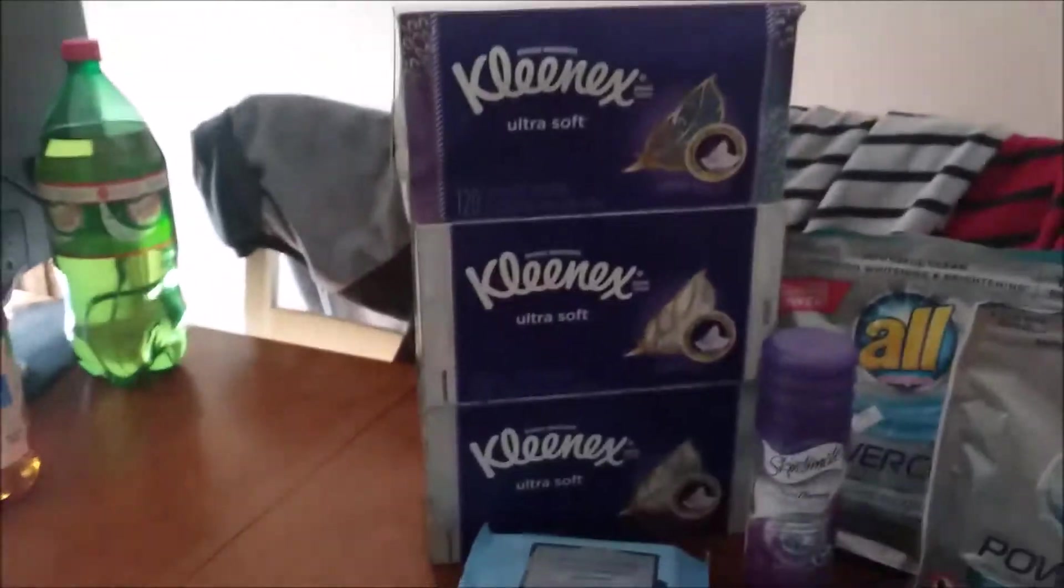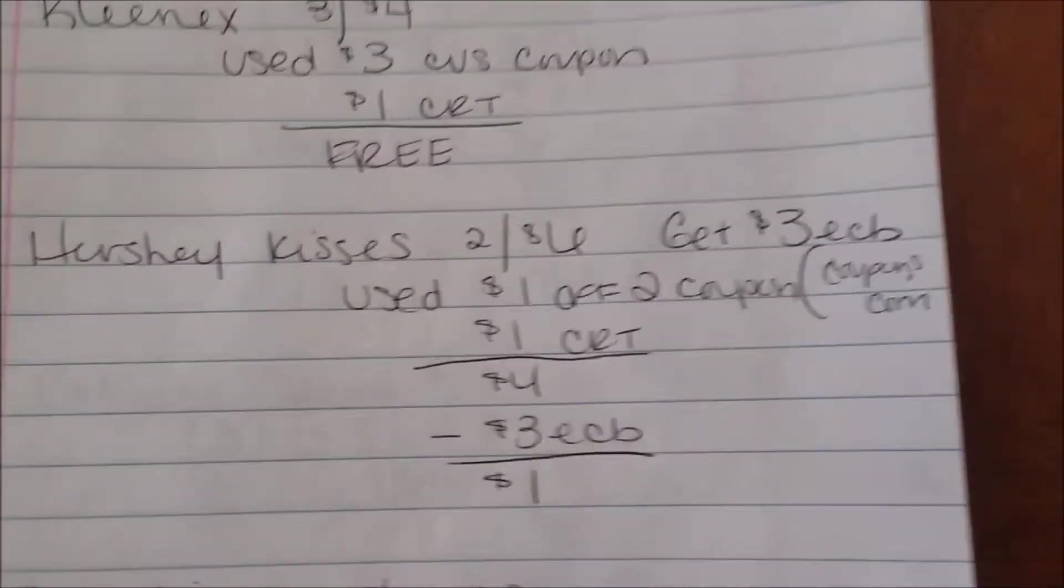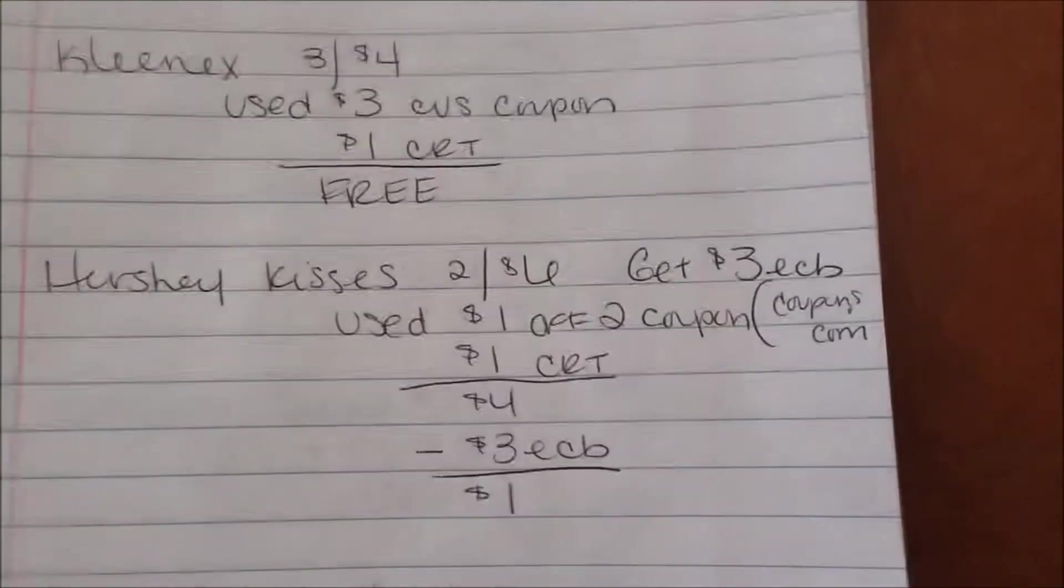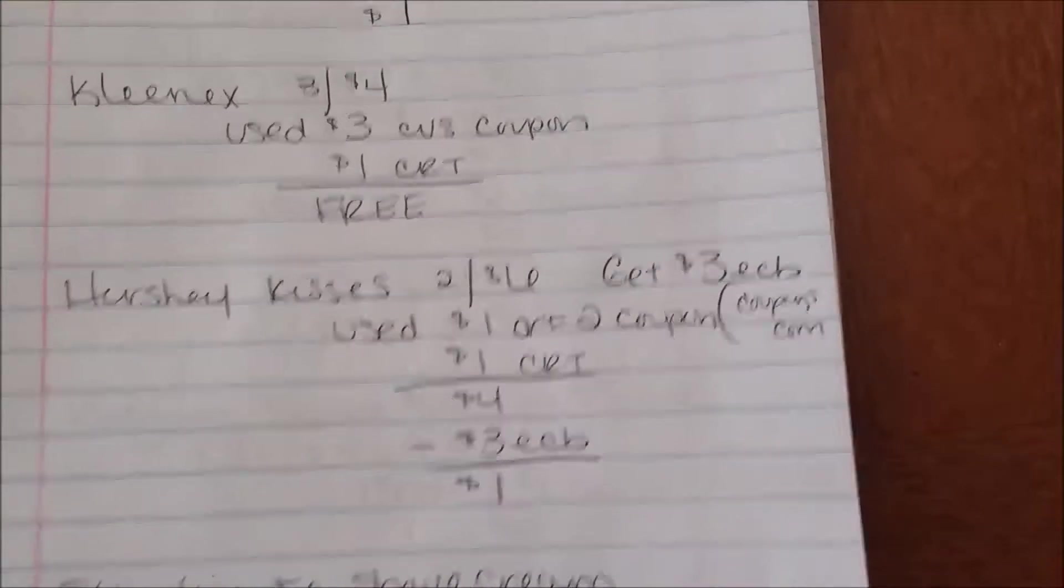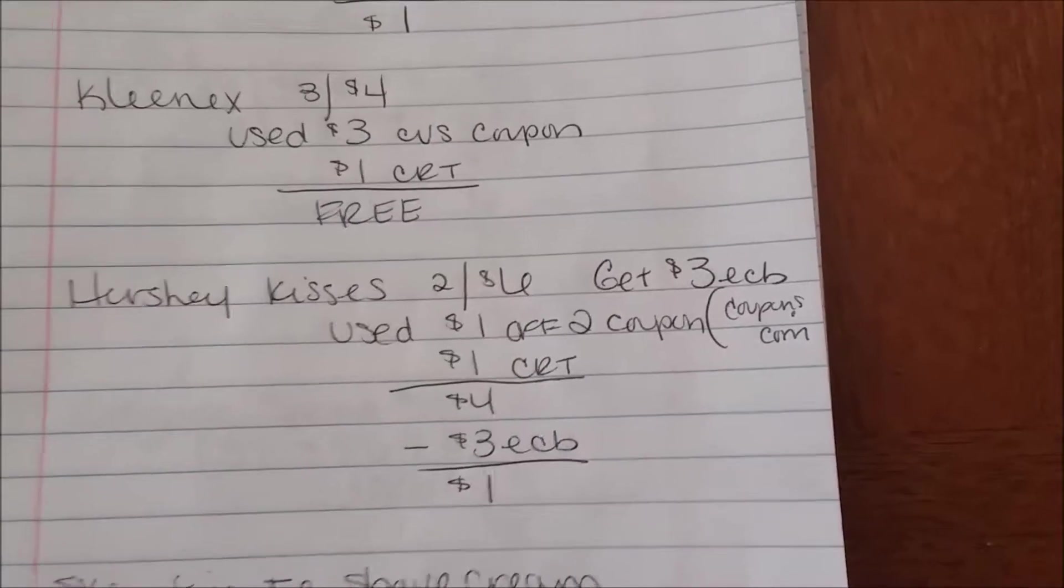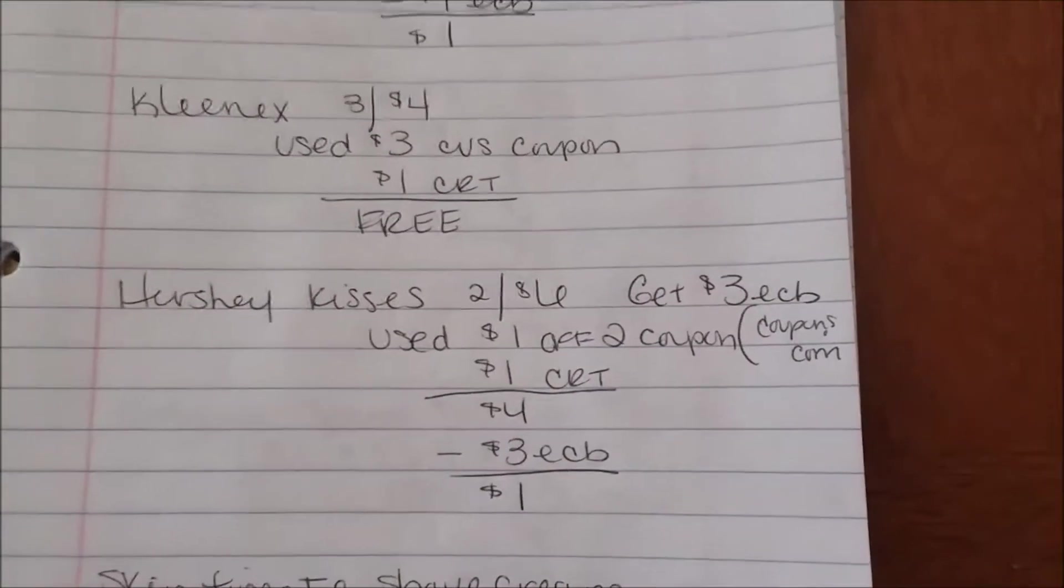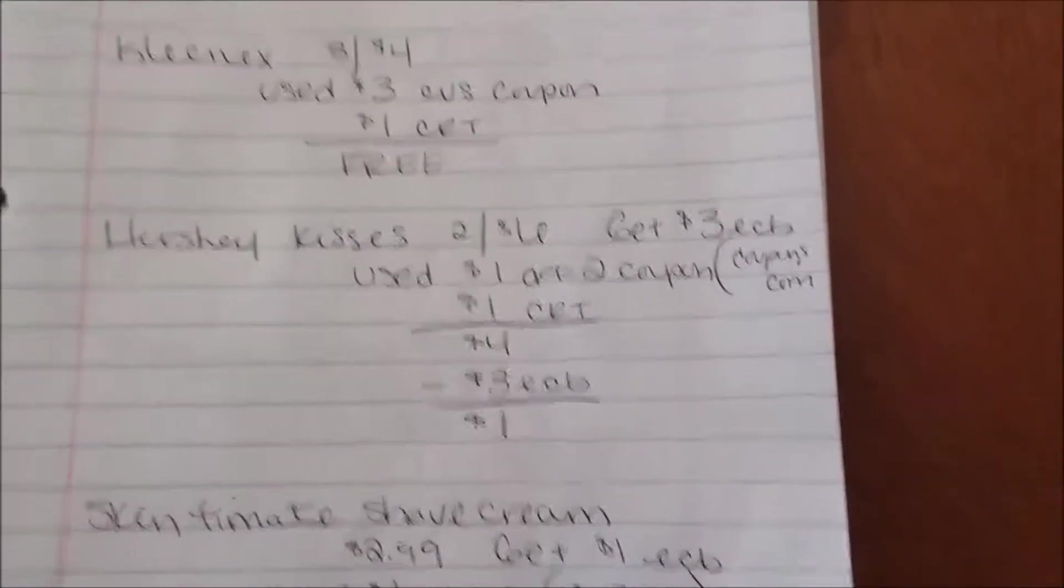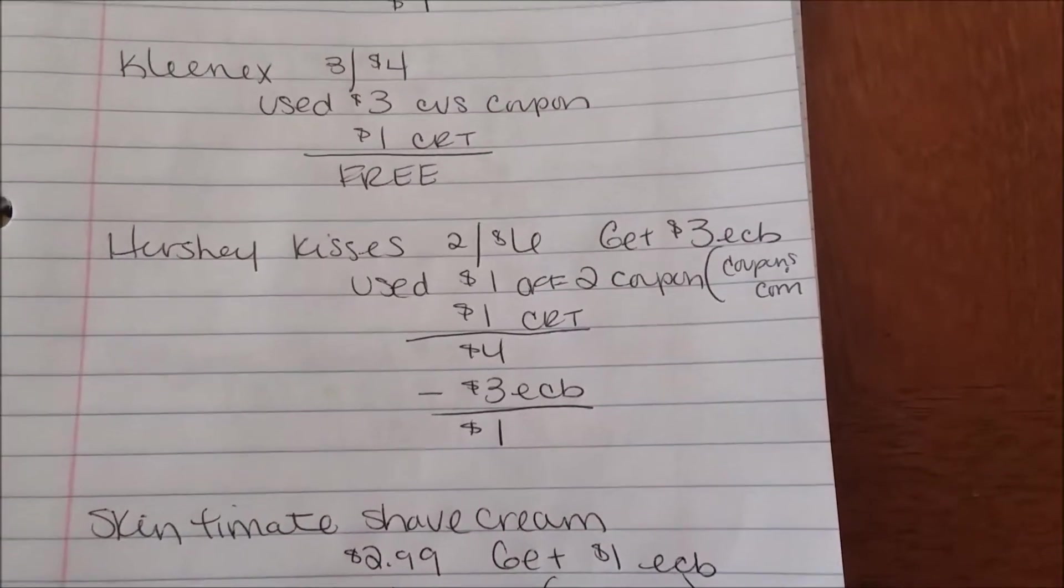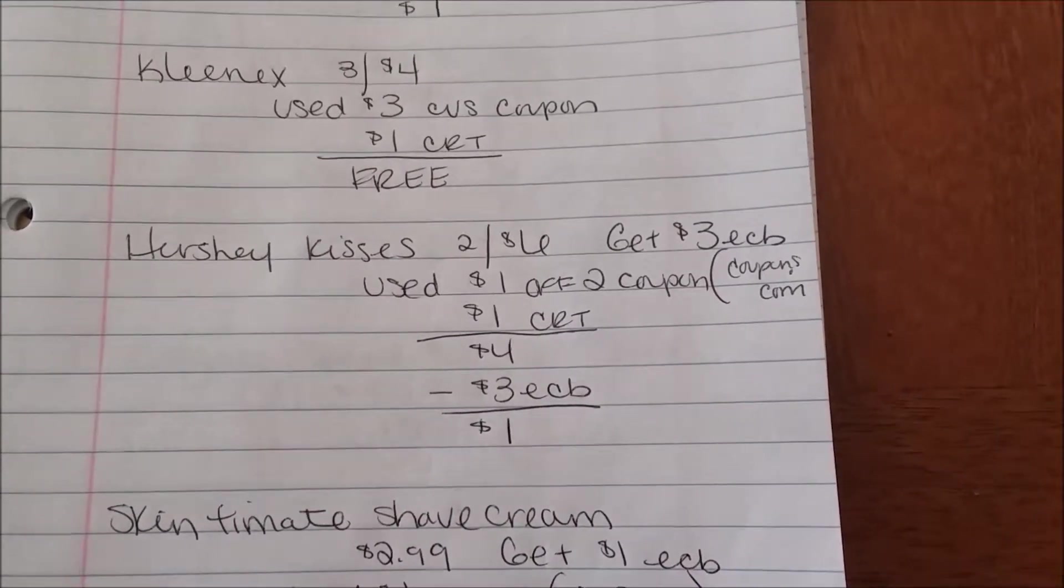The Hershey Kisses are on sale two for six. When you buy two you're gonna get $3 ECB. I used a dollar off two coupon from coupons.com which is no longer available. I had a dollar CRT off two from last week I saved for this week for this sale which brought it down to $4. After I got my $3 ECB back it made it $1 for both of those bags right there. That's an amazing deal, 50 cents a bag for candy.